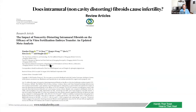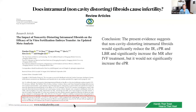A more recent 2018 Chinese meta-analysis titled 'The Impact of Non-cavity-distorting Intramural Fibroids on the Efficacy of IVF and Embryo Transfer: An Updated Meta-analysis' concluded that non-cavity-distorting intramural fibroids would significantly reduce implantation rate, clinical pregnancy rate, and live birth rate, and significantly increase miscarriage rate after IVF treatment — but would not significantly increase ectopic pregnancy rate. This confirms that even non-cavity-distorting intramural fibroids affect pregnancy rate.